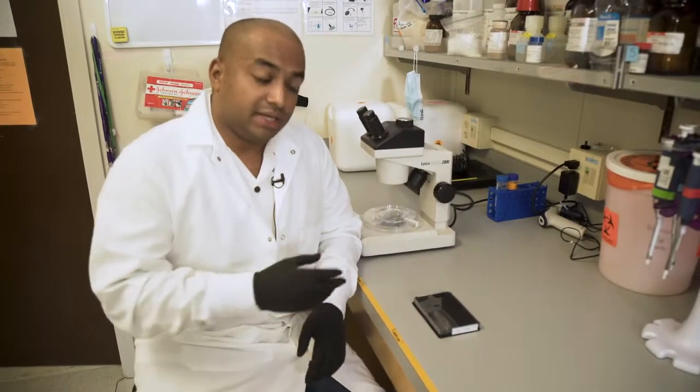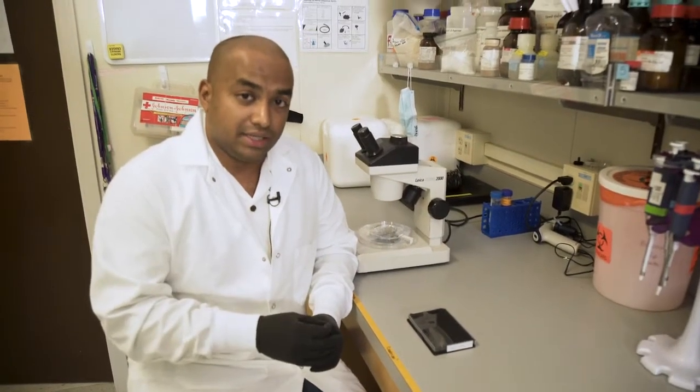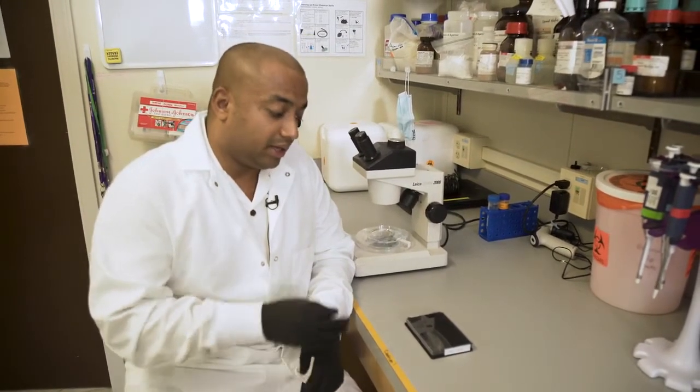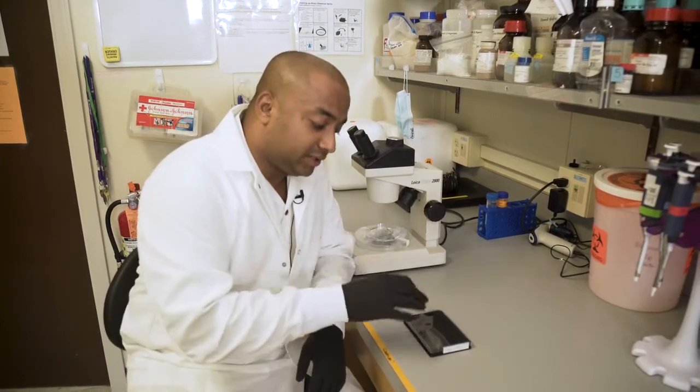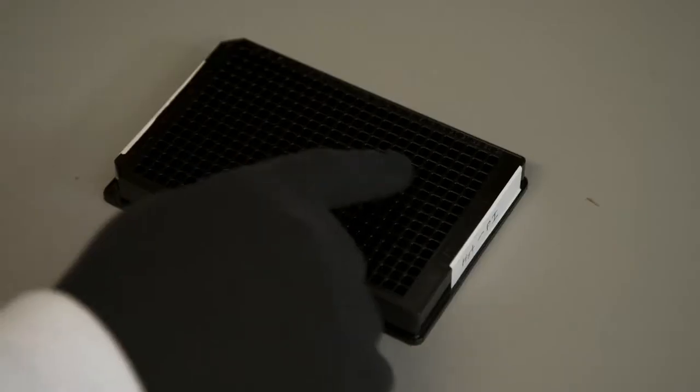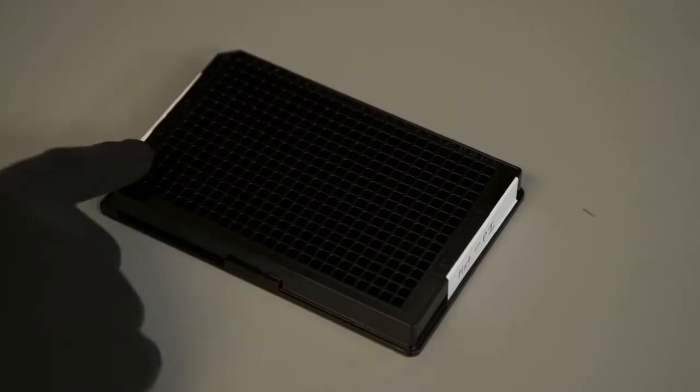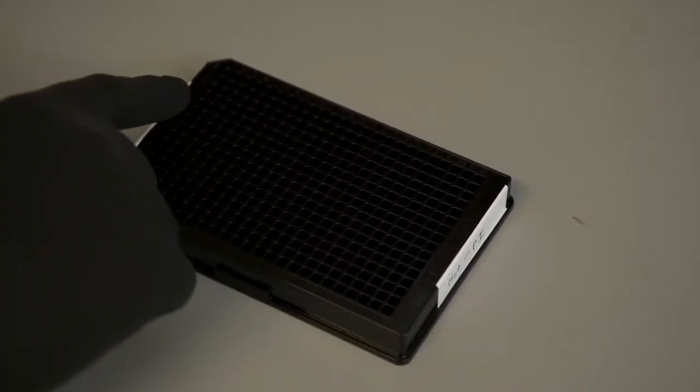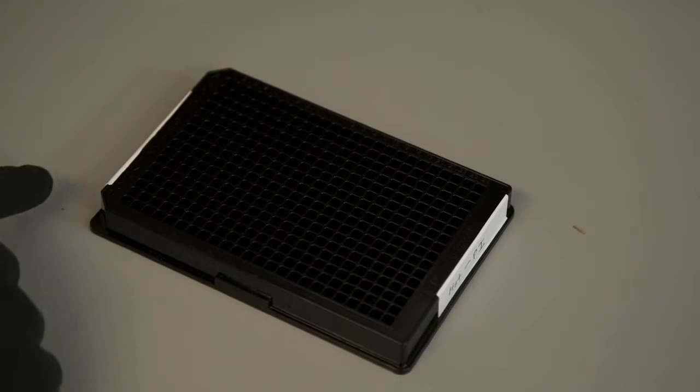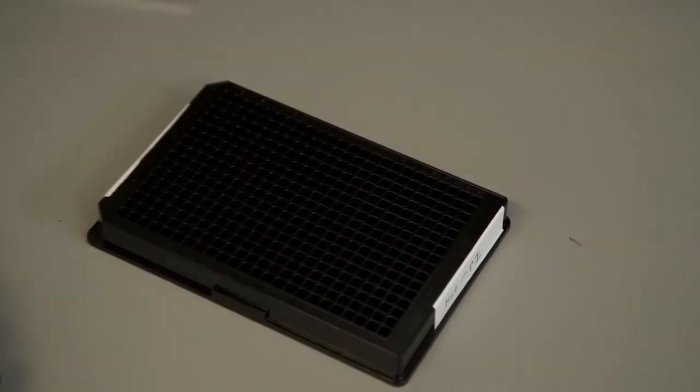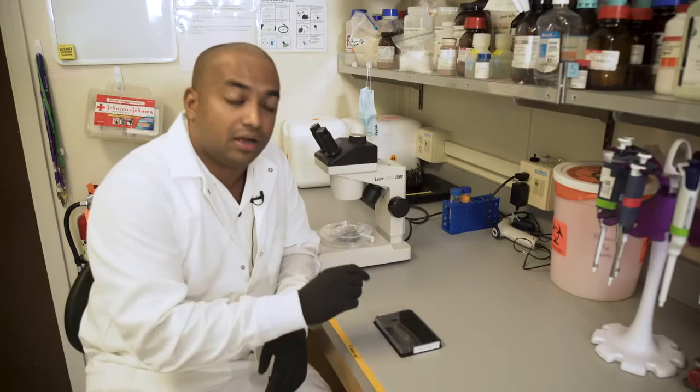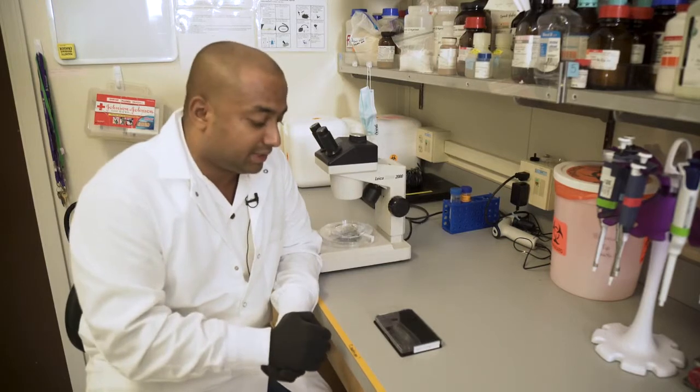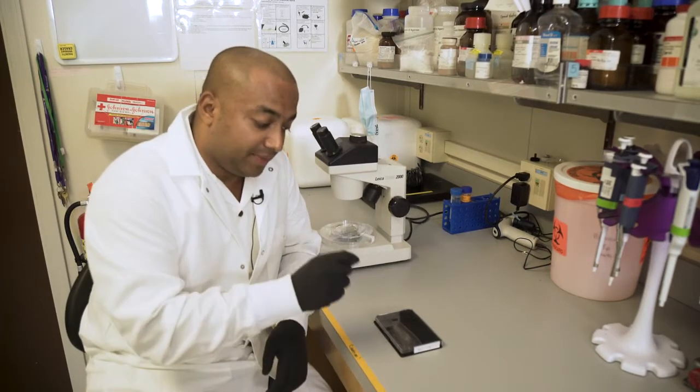We do the testing by isolating the larva by drowning slugs, and we collect them and put them into these plates. This is a 384-well plate. This plate has 384 small wells, and we put 100 larva into each of the wells depending on how many drugs we are testing.